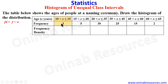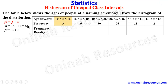We start with the first class interval. The width is going to be 15 minus 10, which gives 5. The frequency is 3, so the frequency density is going to be 3 divided by 5. Three divided by 5 gives 0.6, so the frequency density of the first class interval is 0.6.